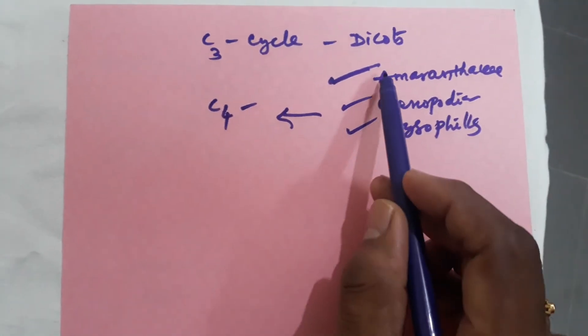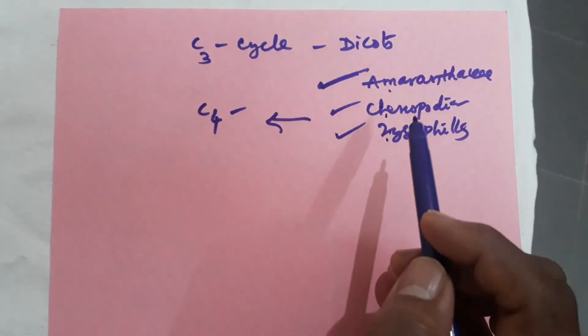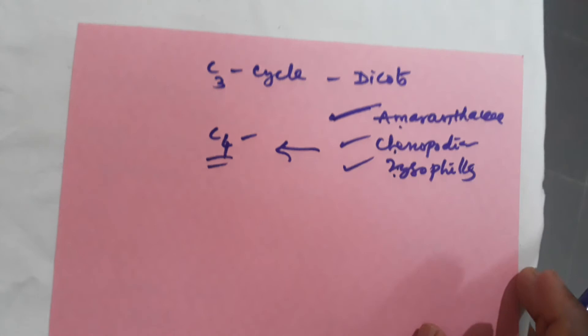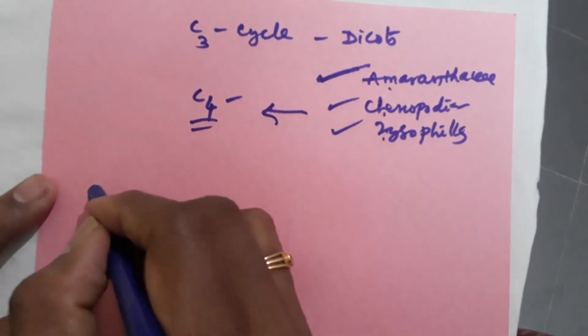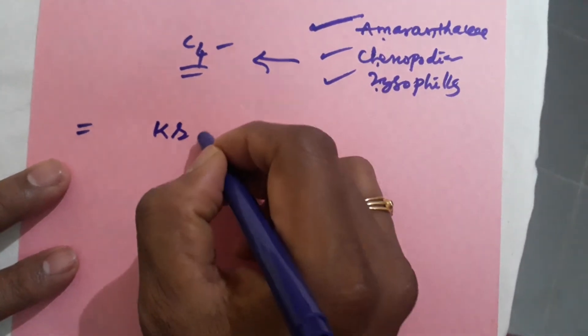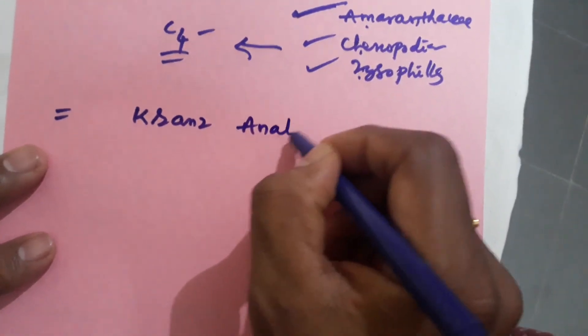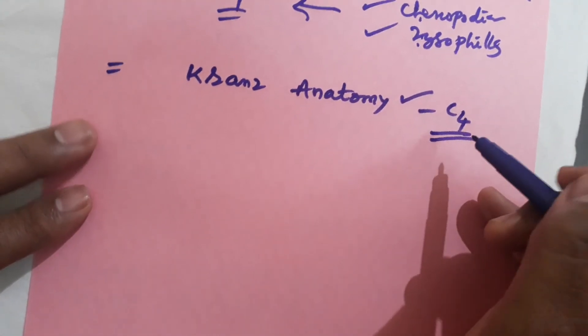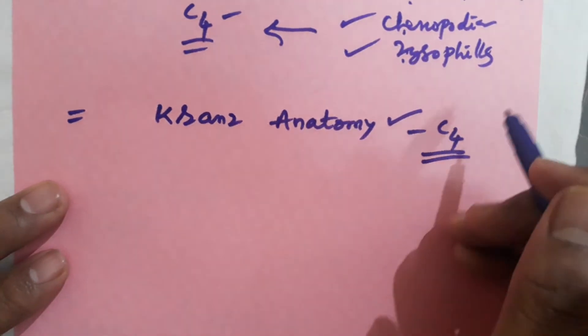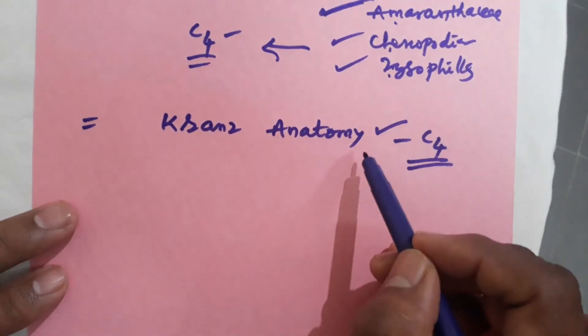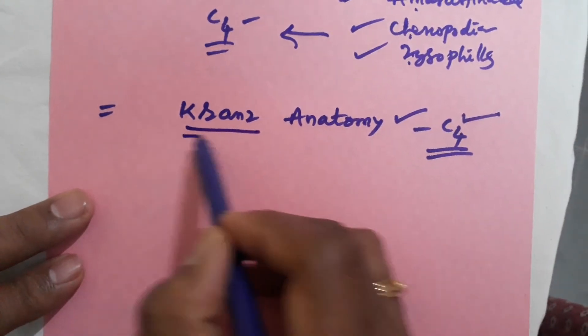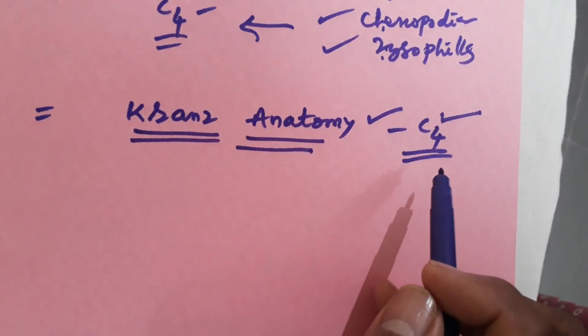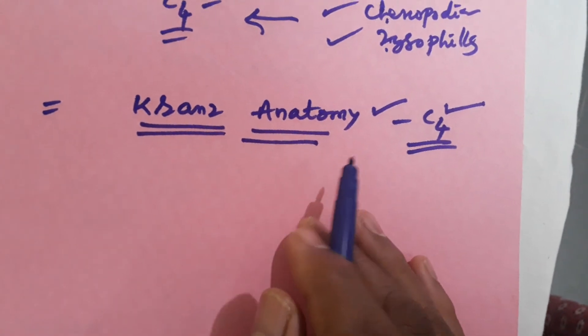V.S. Ramadasu discovered C4 pathway in these 3 family members. Why do some plants exhibit C4 pathway instead of C3? Which plants bear, which plants exhibit Kranz anatomy? Those plants exhibit C4 pathway. Either dicot or monocot, any plant that exhibits C4 cycle must have leaves with Kranz anatomy. It is the main character of C4 plants. Now we will discuss about Kranz anatomy.